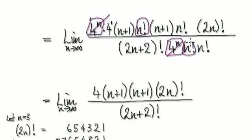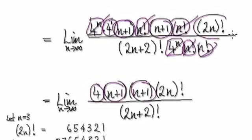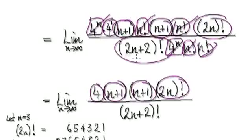So you've got your 4 here, and then you've got your (n+1), and then your (n+1), and your (2n) factorial. And then what's left is the (2n+2) factorial, which is this.